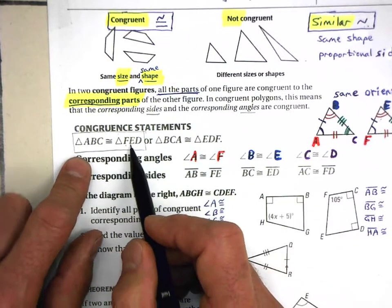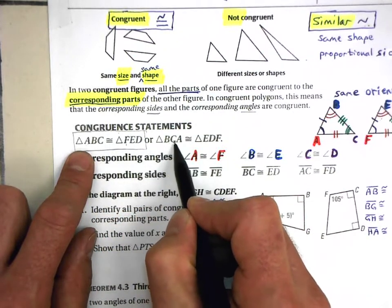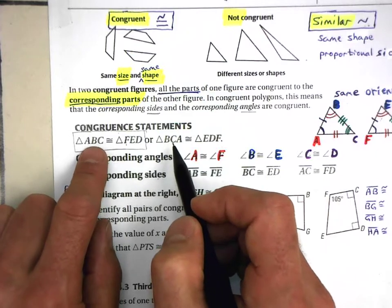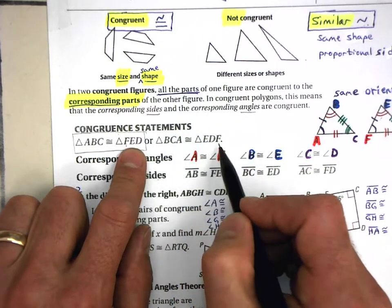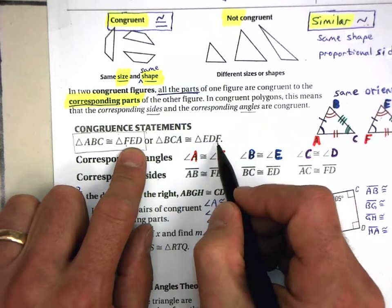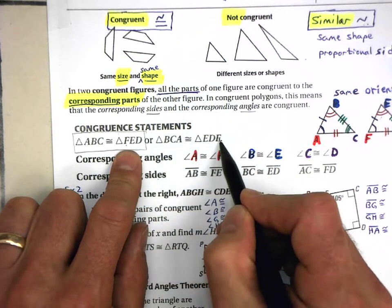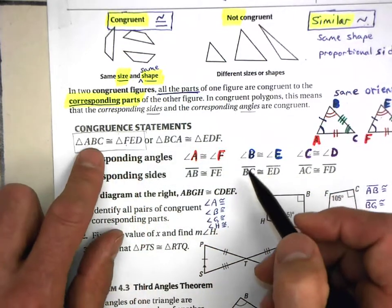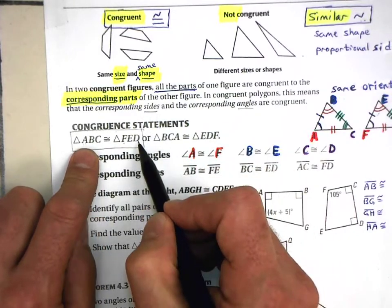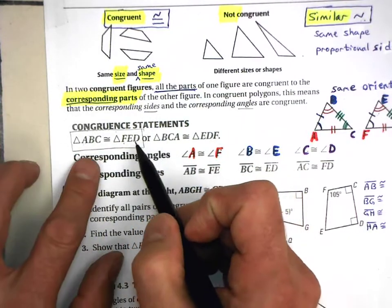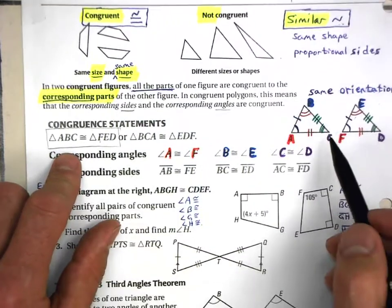This one statement can be written in different ways. Instead of ABC, we could say BCA — starting with the second letter, then the third, then the first — as long as we also change the sequence of the second triangle accordingly: EDF. We could also say triangle CBA is congruent to triangle DEF, going backwards. Whatever sequence you choose is fine, as long as it's the same sequence for both triangles.